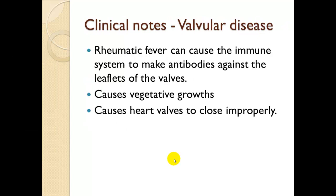Clinical note — valvular disease: rheumatic fever can cause the immune system to make antibodies against the leaflets of the valves. The rheumatic fever sets up in those valves and the body's immune system attacks them, destroying the actual valves. This causes vegetative growths and causes the heart valves to close improperly, so every time the ventricle's pressure increases, regurgitation occurs back into the previous chamber.